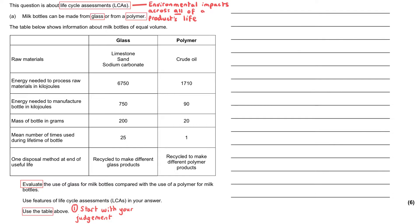That's what life cycle assessments are about. They evaluate the environmental impact of a product across all stages of that product's life, and these stages are shown on the left-hand side here. The only thing we're allowed to bring into this answer is how the environment is affected by these things we're told.